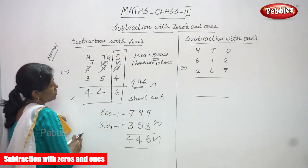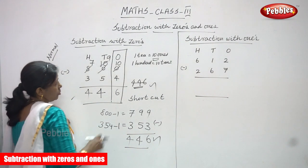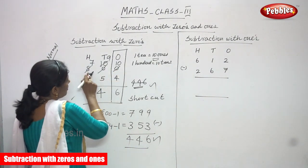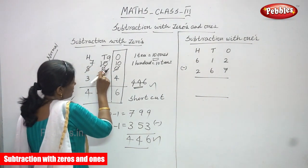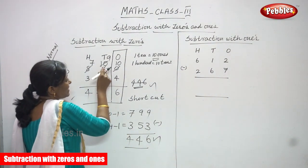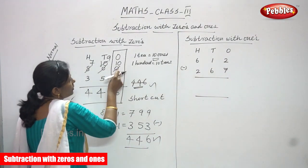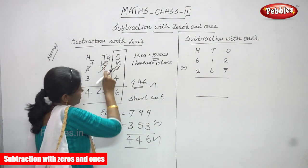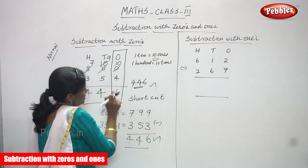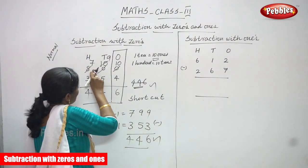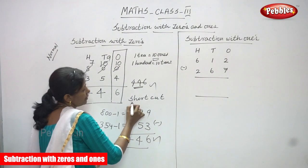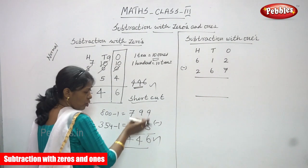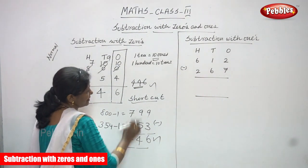I think you understand the concept — subtraction with zero. Don't forget, this is very important. A lot of sums are given like this. Just go through the video once again. Don't forget: ones place zero and tens place zero means you have to borrow from 100. If I borrow only one from 100, this eight becomes 700. This tens place zero becomes ten — ten tens equals 100, so this zero becomes ten. Again I borrow one ten, so this ones place zero becomes ten. This tens becomes nine. So ten minus four you can get six, nine minus five you can get four, and seven minus three you can get four. The answer is 446. The shortcut: 800 minus one is 799, 354 minus one is 353 — then normal subtraction gives 446. This is the right answer.